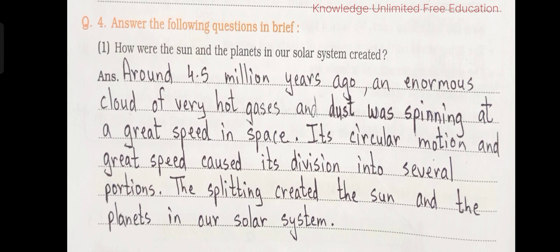Question number 4: Answer the following questions in brief. Number 1 — How were the sun and the planets in our solar system created? Answer: Around 4.5 million years ago, an enormous cloud of very hot gases and dust was spinning at a great speed in space. Its circular motion and great speed caused its division into several portions.